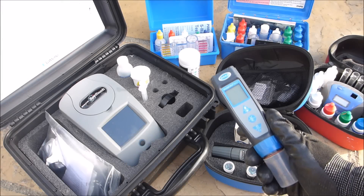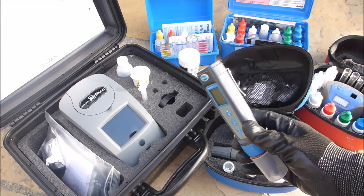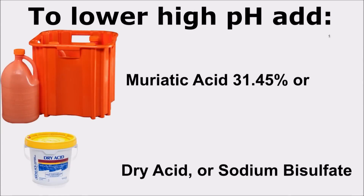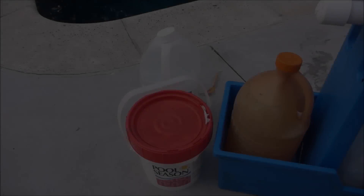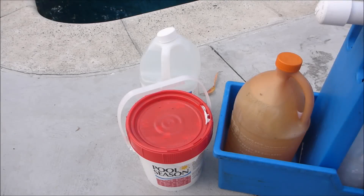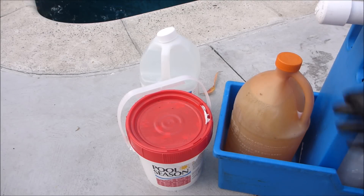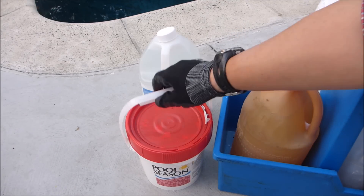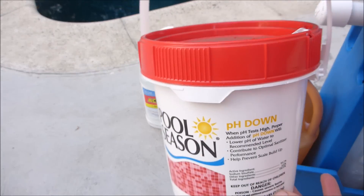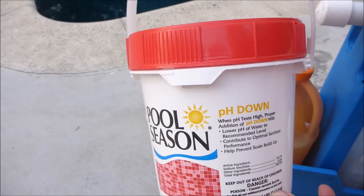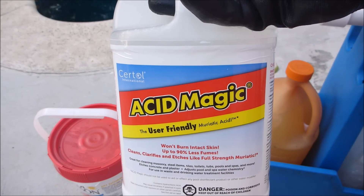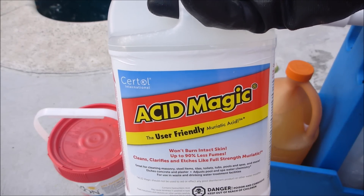No matter how you choose to test for your pH, it's important to test for it at least once a week. If your pH is high and you need to lower it, you want to use muriatic acid. You can also use a dry acid or pH Down. There's also an alternative to muriatic acid, like Acid Magic, which has 90% less fumes.